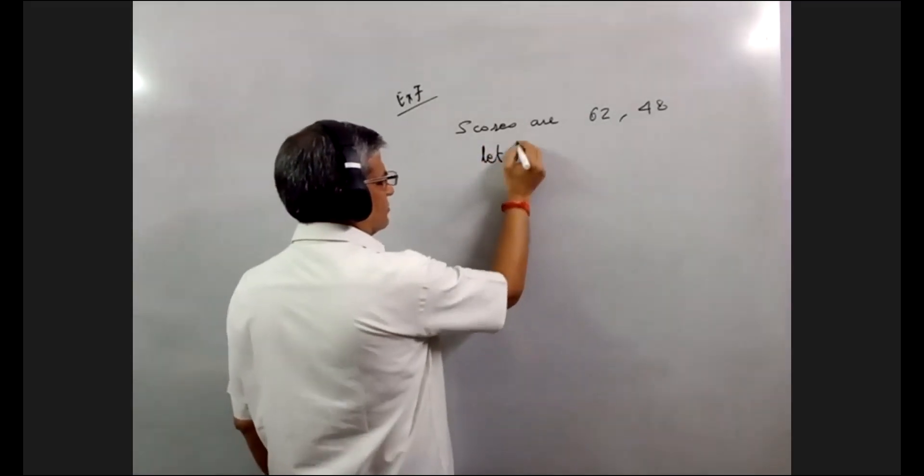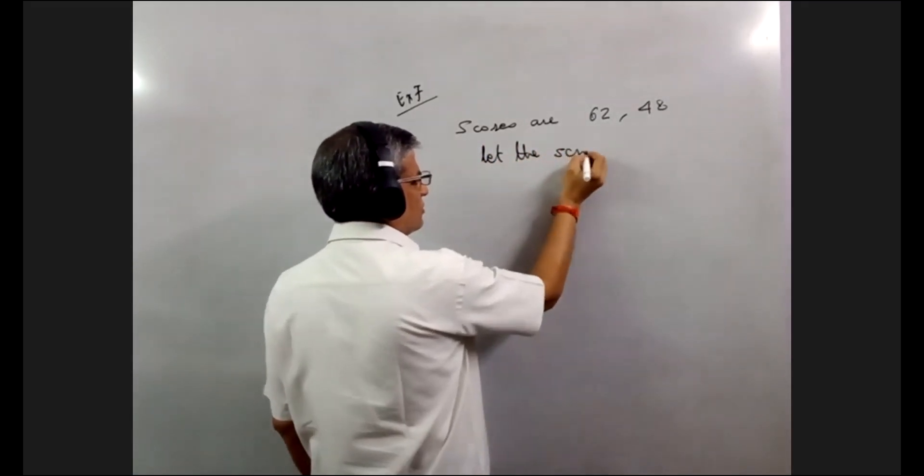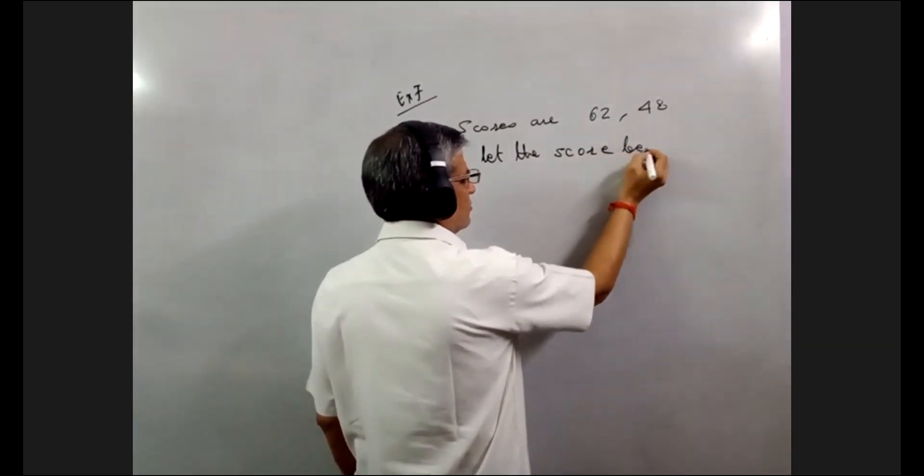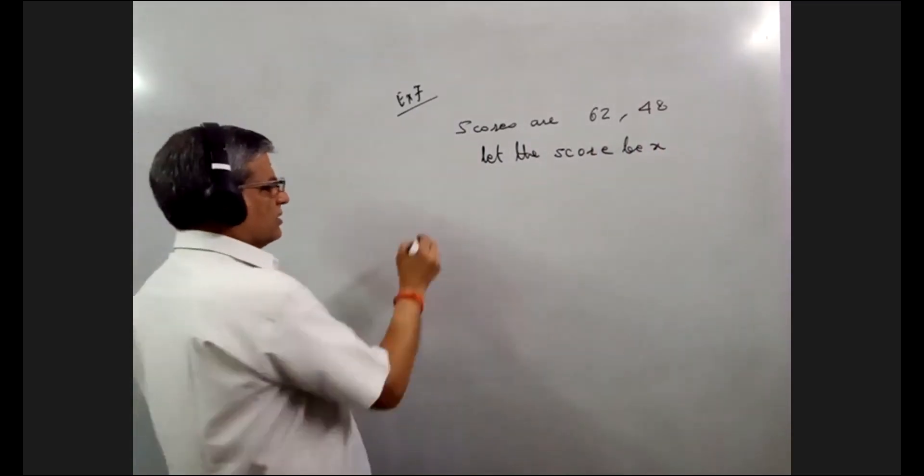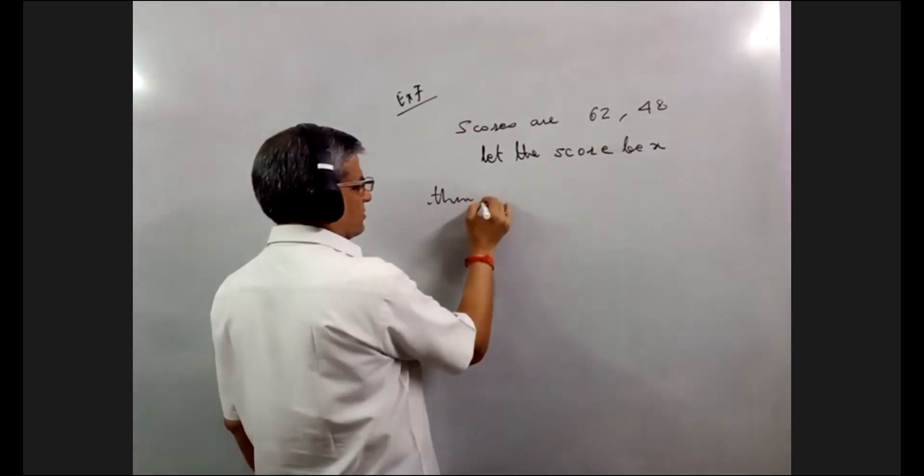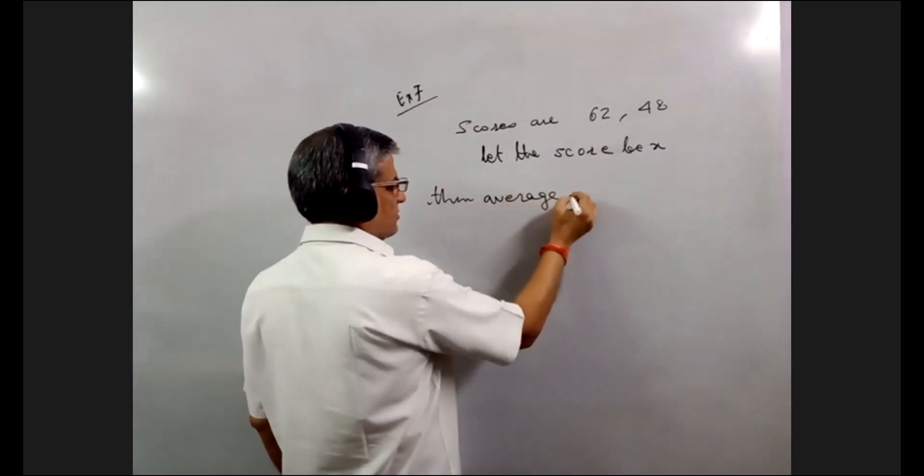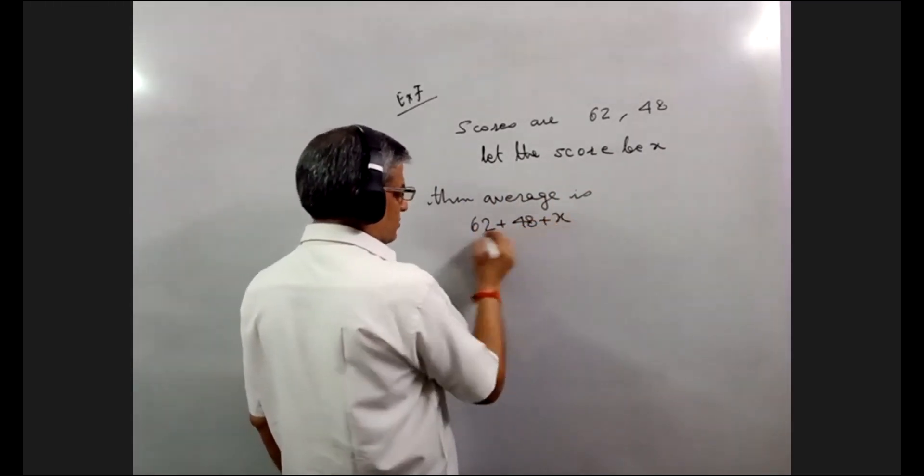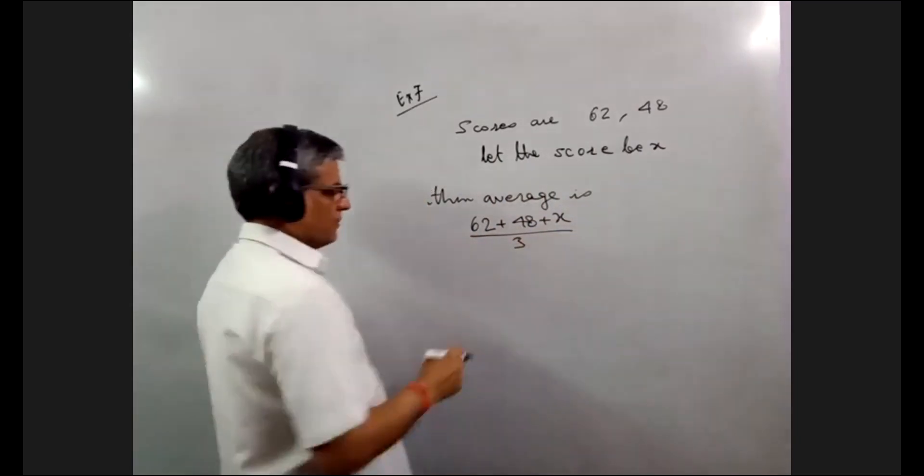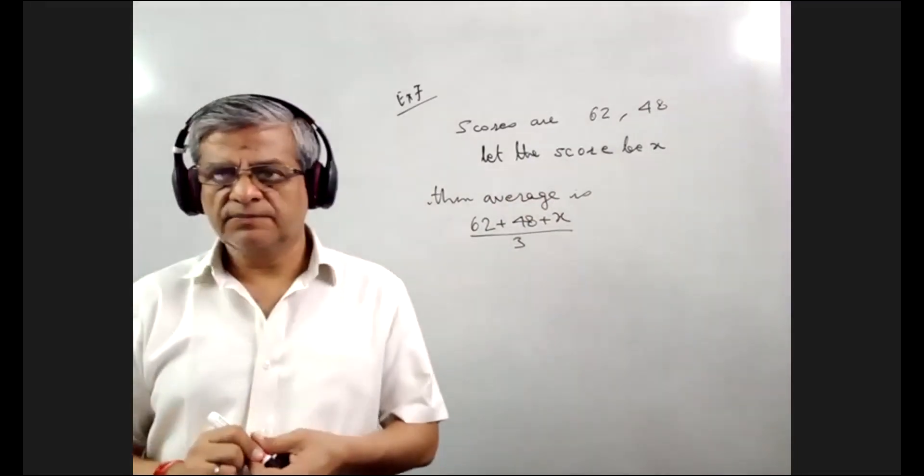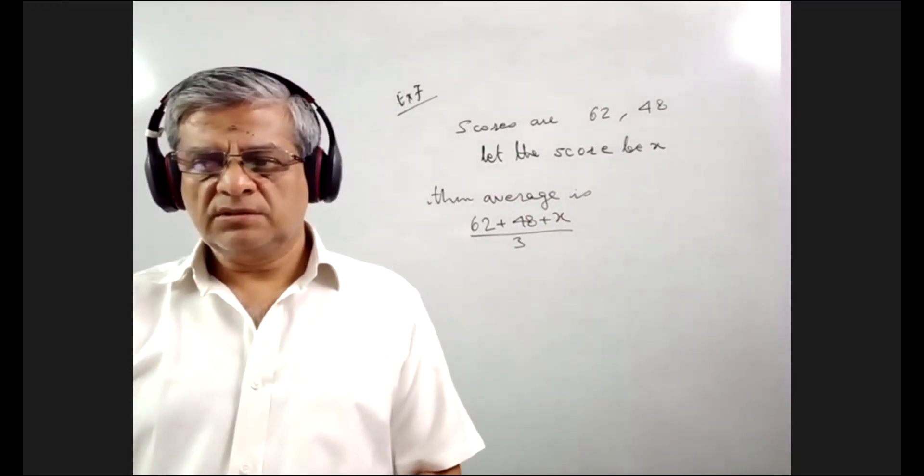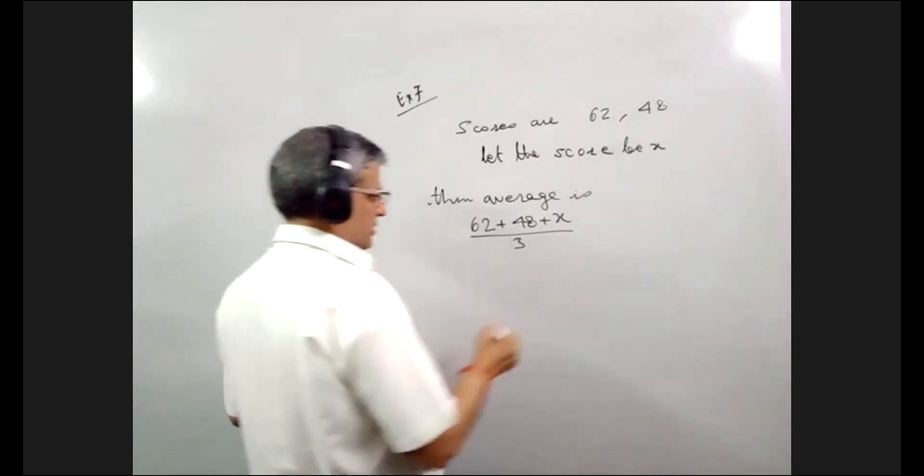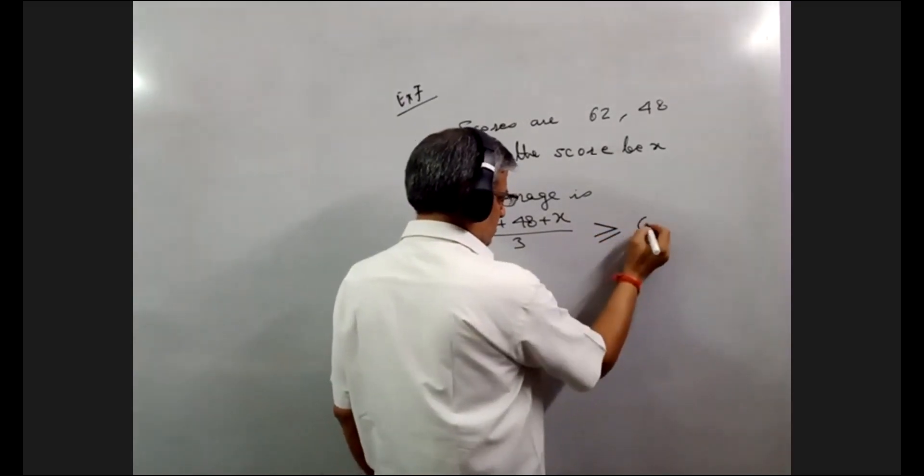So, let's assume, let the score be x. The average is 62 plus 48 plus x divided by 3. Now, this should be more than equal to 60.